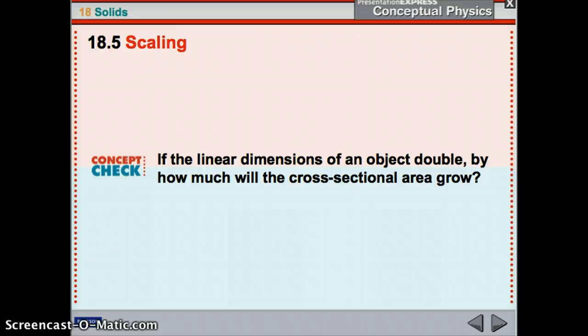Alright. So, if you double the linear dimensions of an object, by how much will the cross-sectional area grow? It goes up by the square. So, it will go up by 4, which is 2 squared.